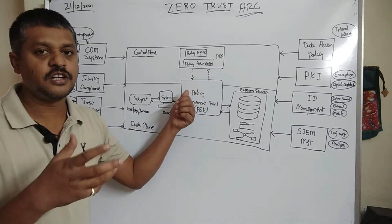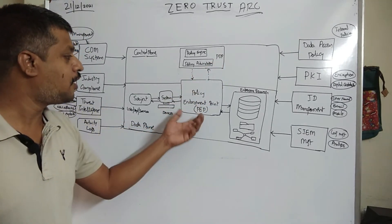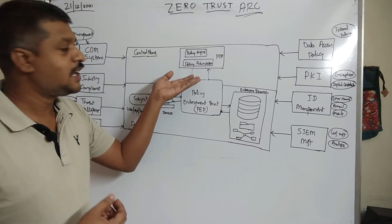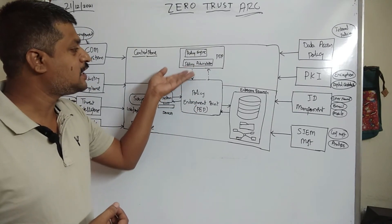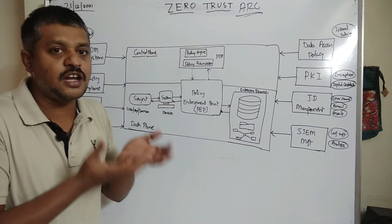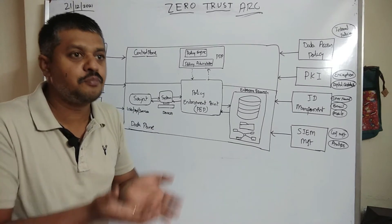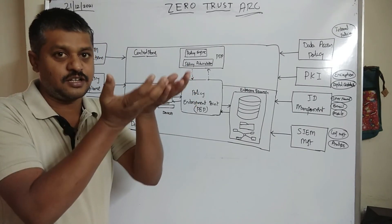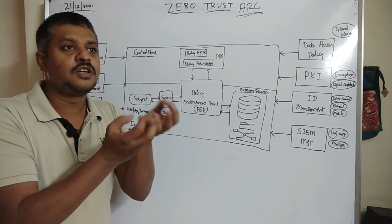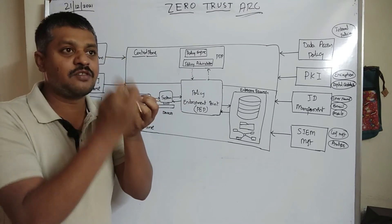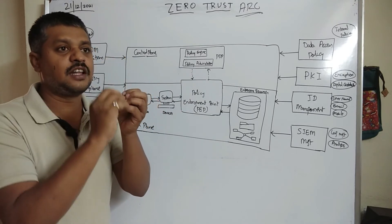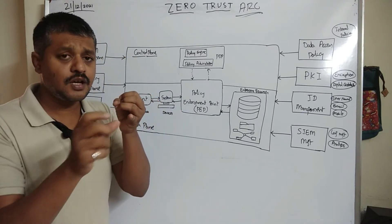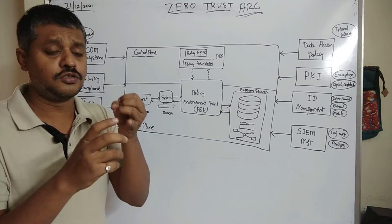The moment the connection comes to the policy enforcement point, it will divert that connection to the policy engine, or the policy decision point (PDP). The PDP receives the request and the policy administrator pushes that request to the policy engine. The policy engine will then check against all the rules.